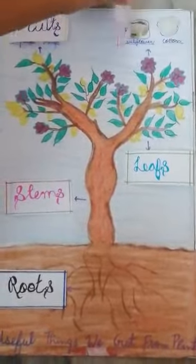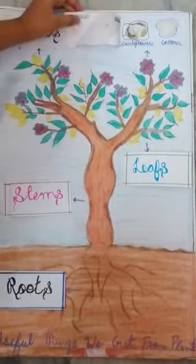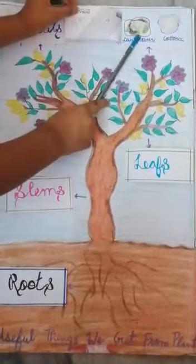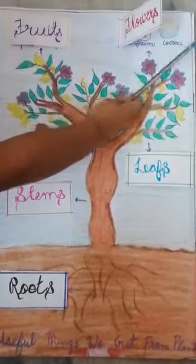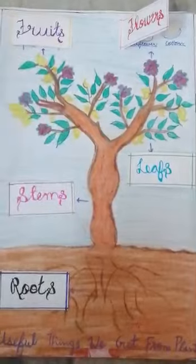From the flower, we get cauliflower, cotton, sunflower, etc.